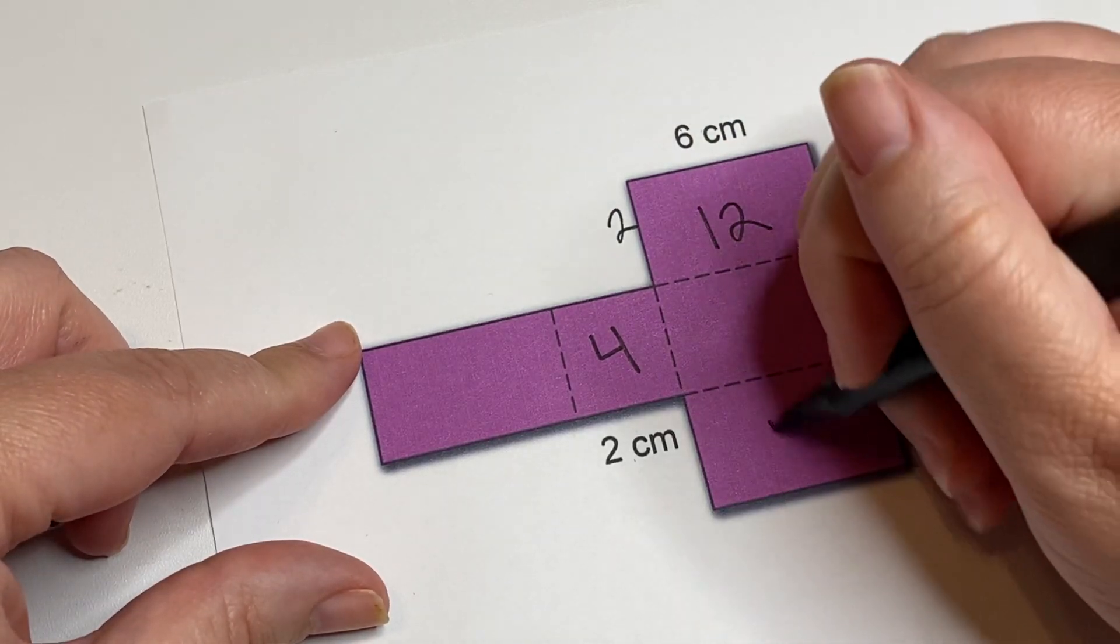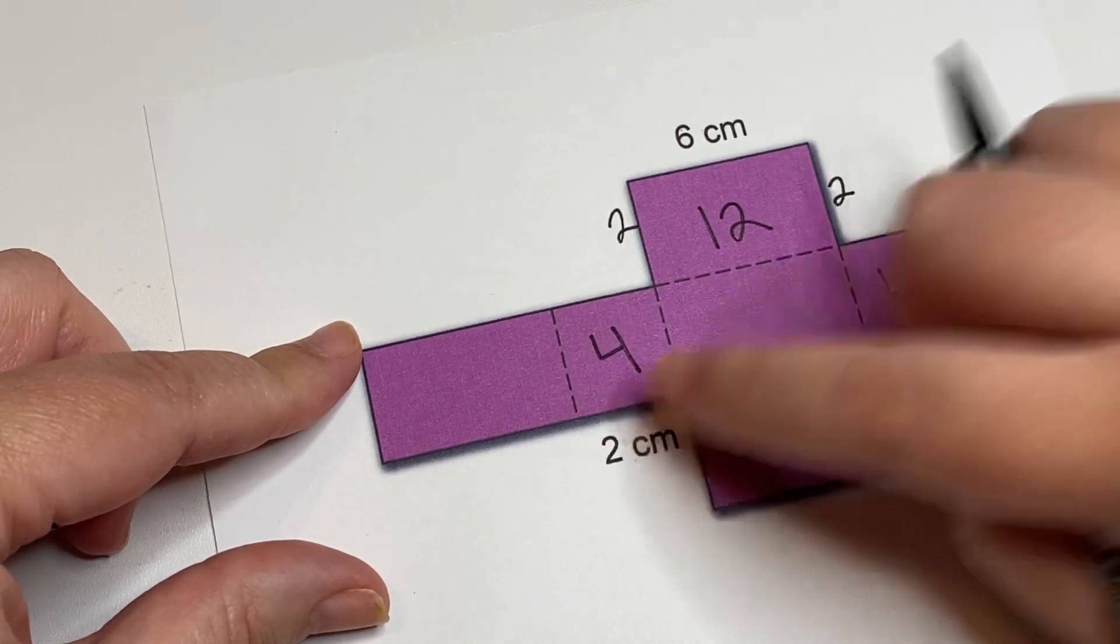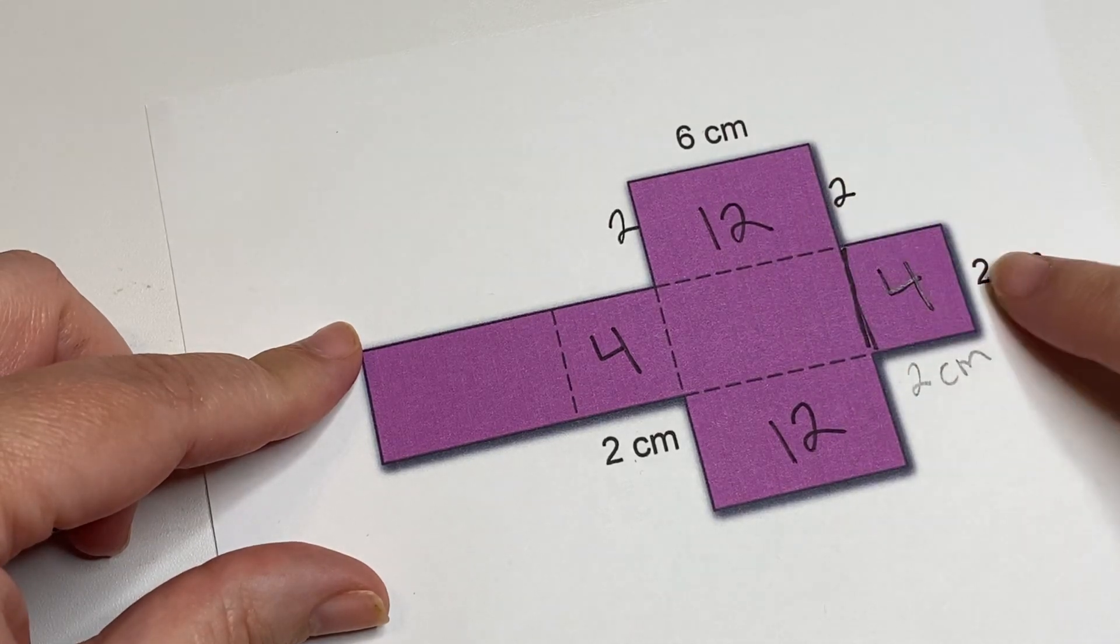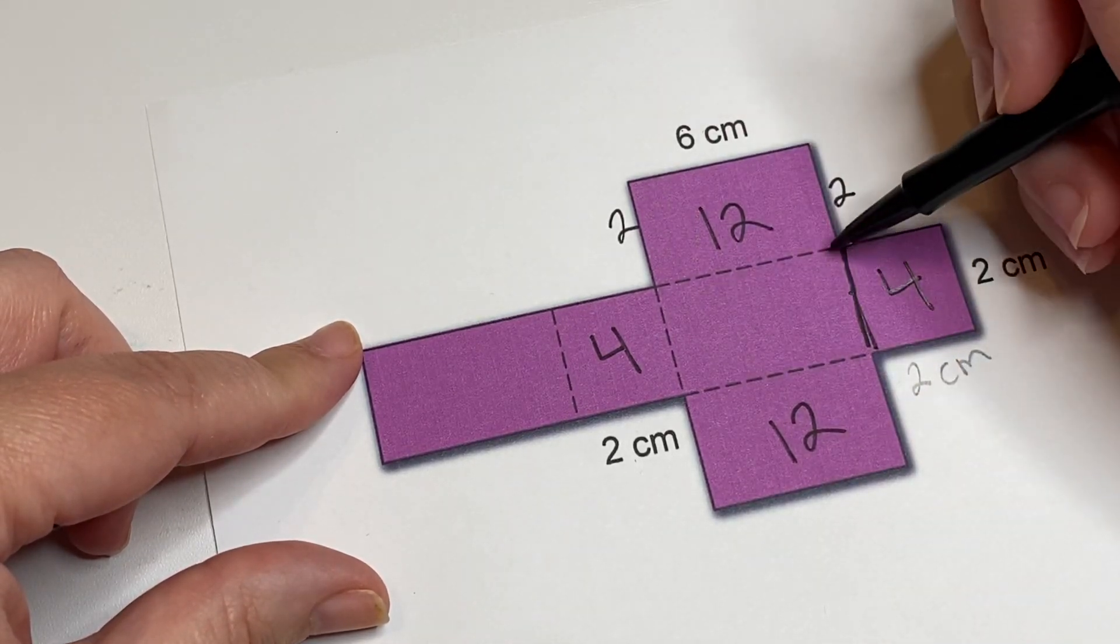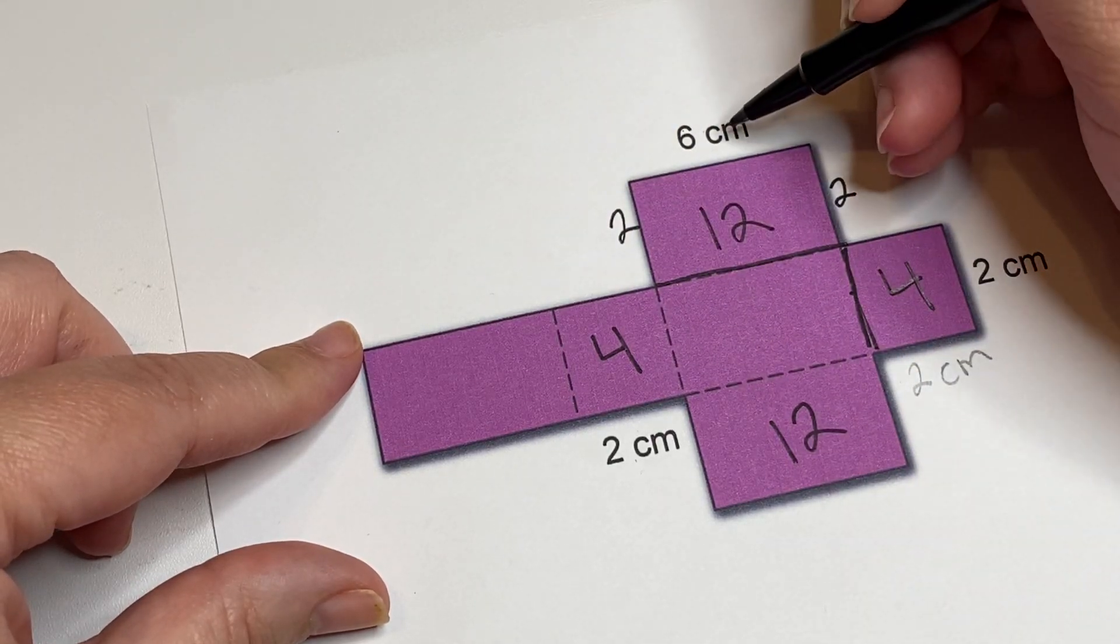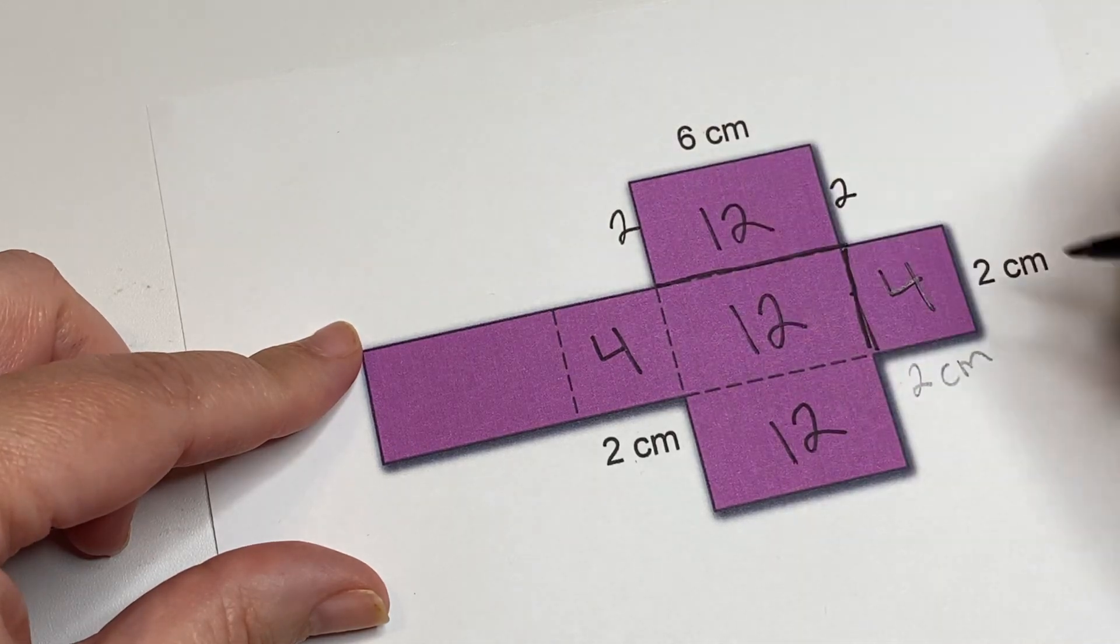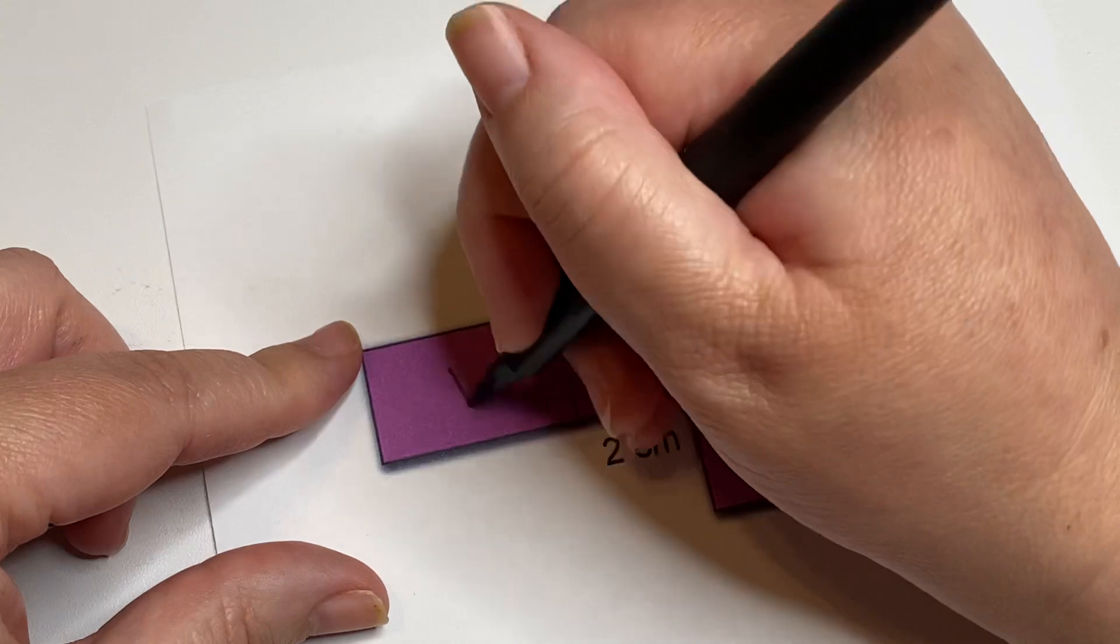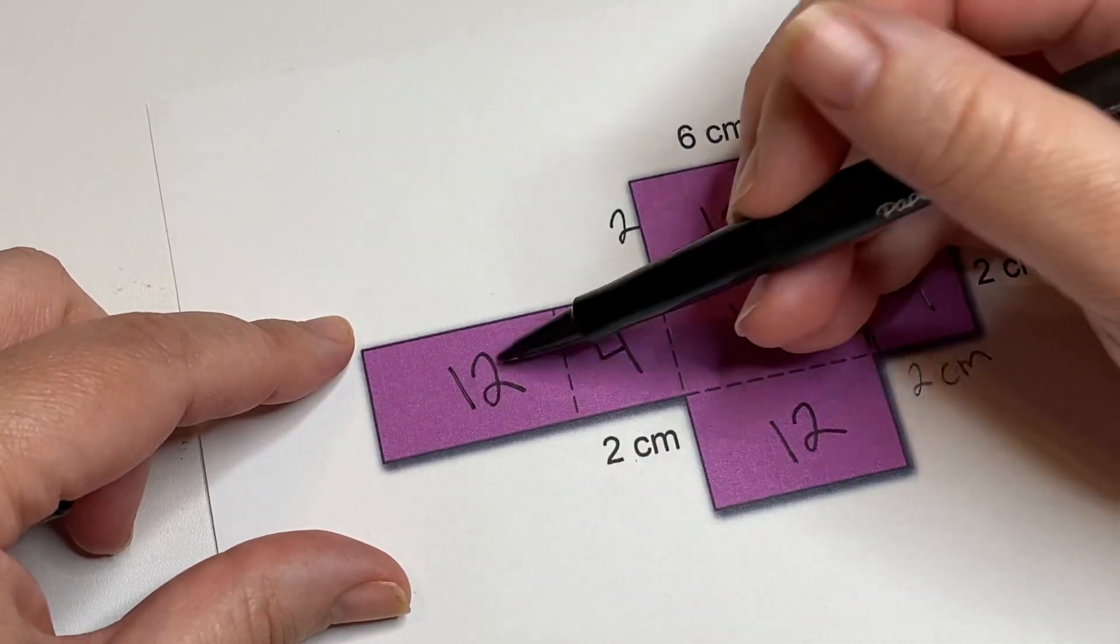And this one and this one are the same because they're opposite of each other. So we've got these two twelves, we have two fours. Now this one, this length is going to be the same as this length, which is two. And then this length is going to be six, so this is going to be two times six as well, so this will be 12. And this is the opposite, so it is the same.